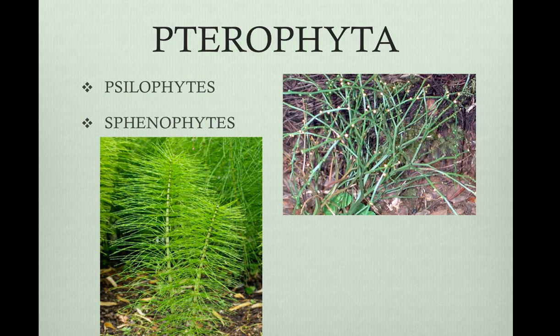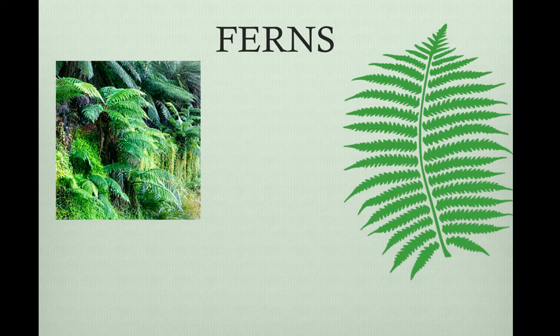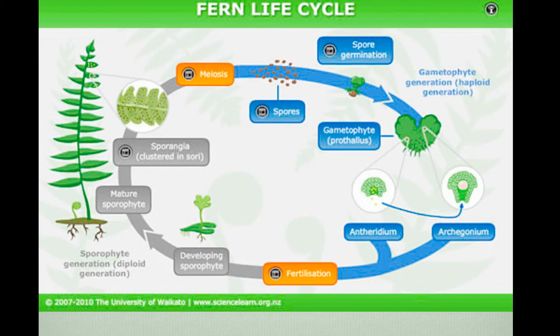There are about 12,000 species of ferns. They're the most widespread and diverse pteridophytes. They're most common in the tropics, but also found in temperate areas. Fronds are fern leaves, and sori are clusters of sporangia on the undersides of the leaves. In the life cycle of a fern, the sporangia undergo meiosis, producing spores. The spores germinate and produce the gametophyte, which produces the antheridium and the archegonium. Fertilization occurs, developing into the sporophyte, which grows into the mature fern.